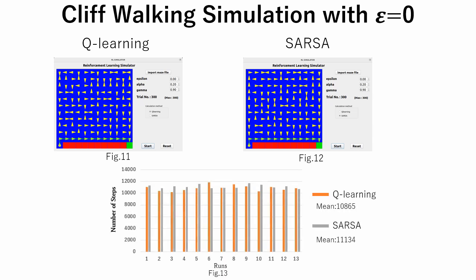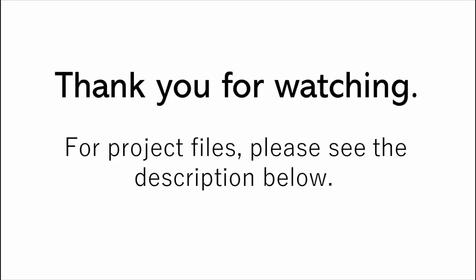Number of steps employed for solving the cliff-walking task is compared in figure 13. From these results we can conclude that if epsilon is set to 0, that is because greedy policy has been used, Q-learning and SARSA derive the same path.